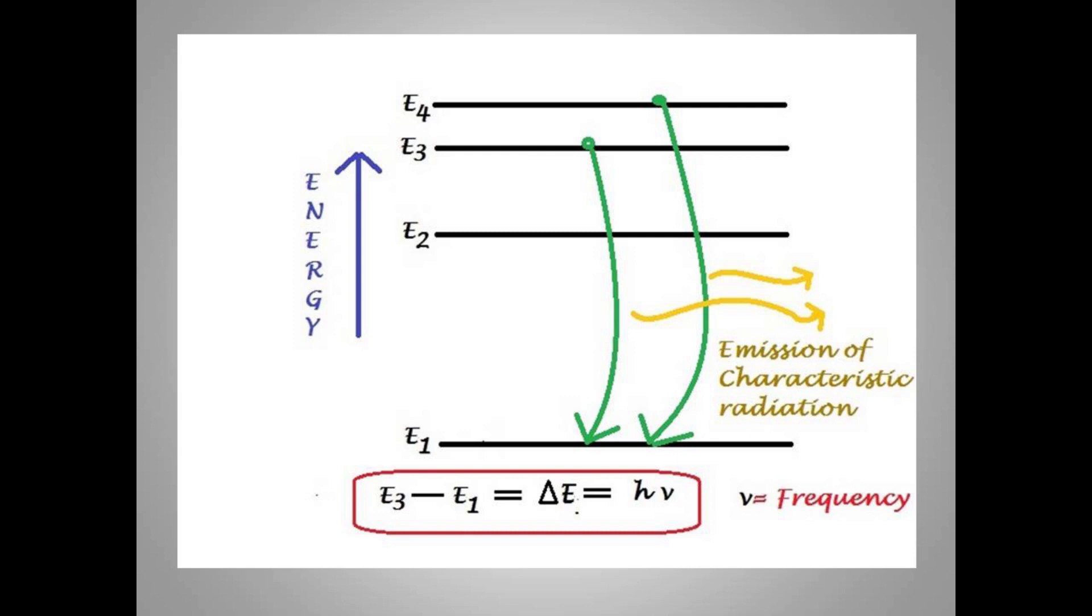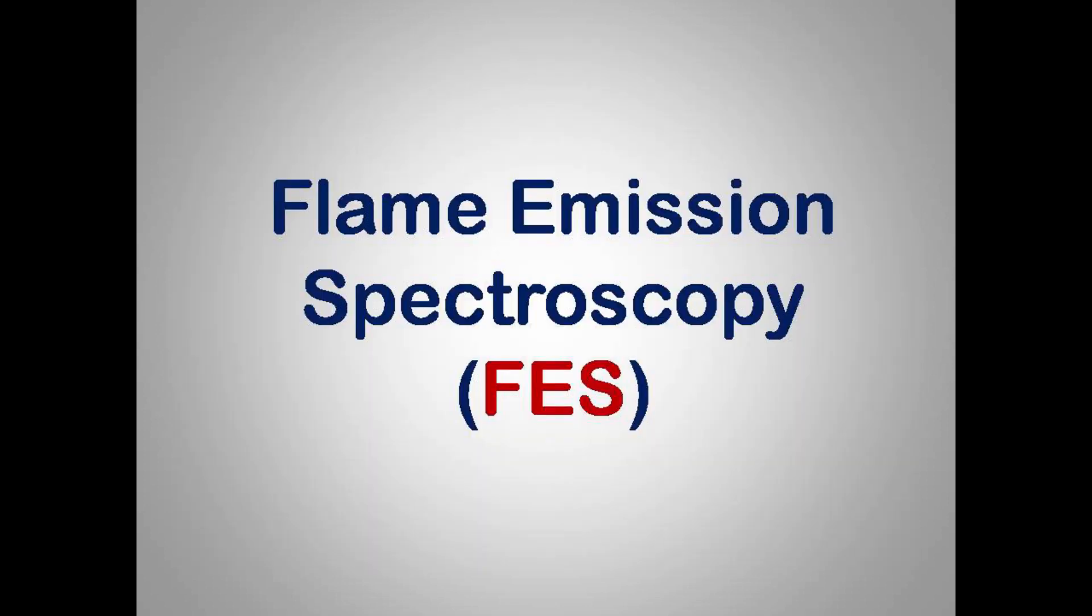That means each atom emits light of a particular wavelength which is characteristic to it. So let us start with today's topic, flame emission spectroscopy, abbreviated as FES. The concept which underlies the principle in flame emission spectroscopy is the atomization of the sample. Flame emission spectroscopy requires a high temperature flame because in the flame, the atomization of sample takes place.